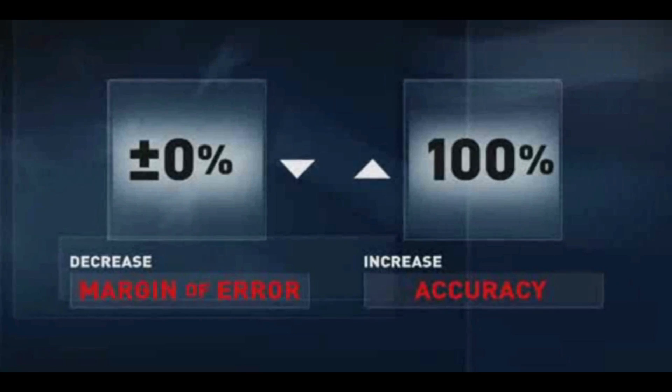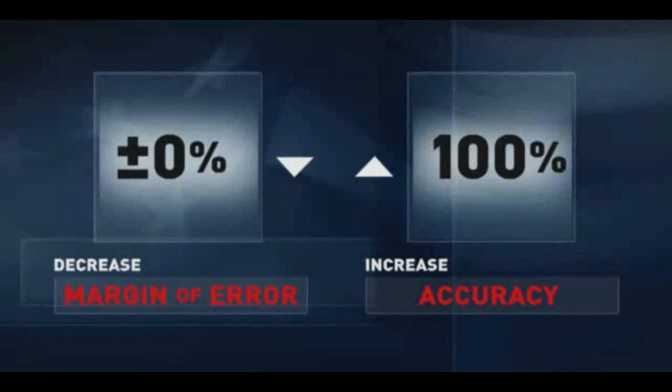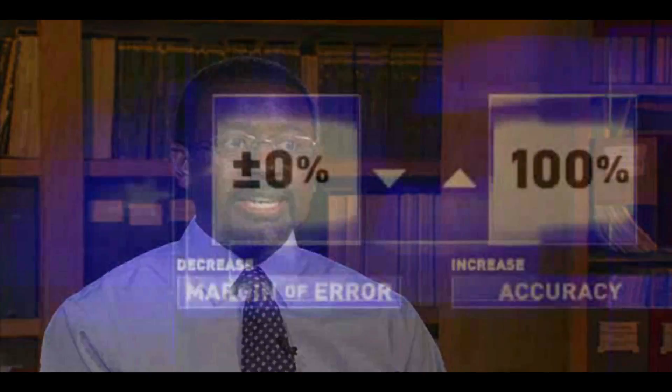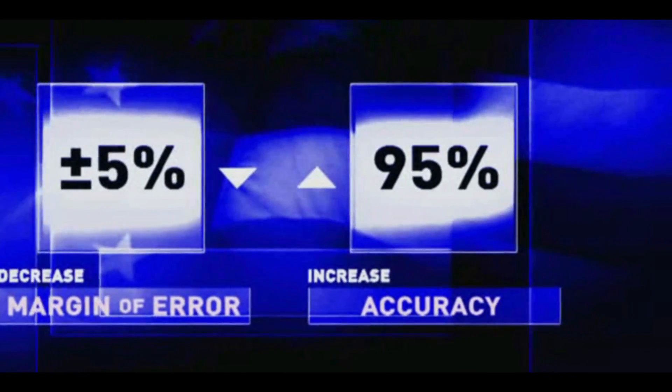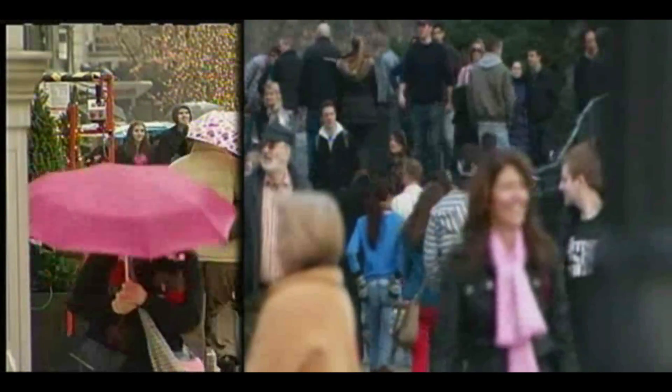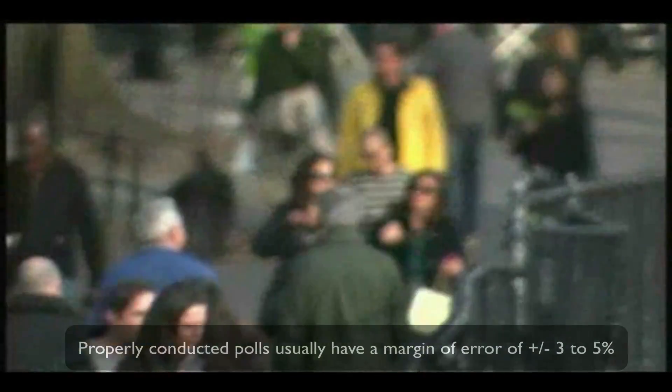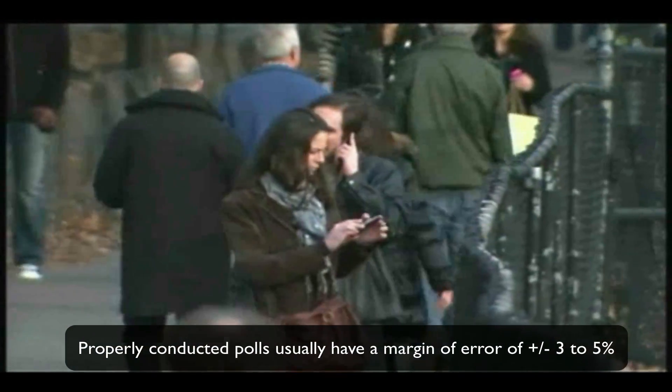What that means is that the number reported in the survey could be three to five percentage points higher or lower, given the size of the sample and the level of uncertainty associated with that size, but we know it's in that range. Even though polls rely on just a slice of the population to gauge public opinion, they are far more accurate than you might think.